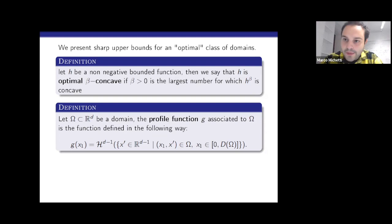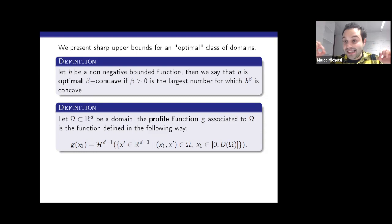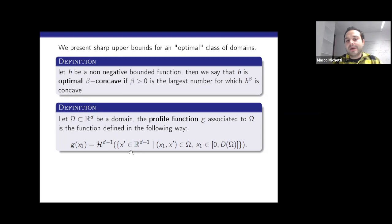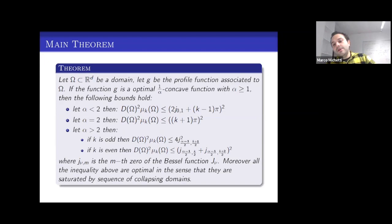To any domain I would like to associate a one-dimensional function, which I call the profile function of the domain, defined as follows. I take a domain omega in R^d, take the segment that realizes the diameter of the domain, then take hyperplanes orthogonal to it and measure the intersection of each hyperplane with the domain omega. This function is the Hausdorff (d−1)-measure of the points x' in the plane that intersect the domain — the H^{d-1} measure of the intersection.